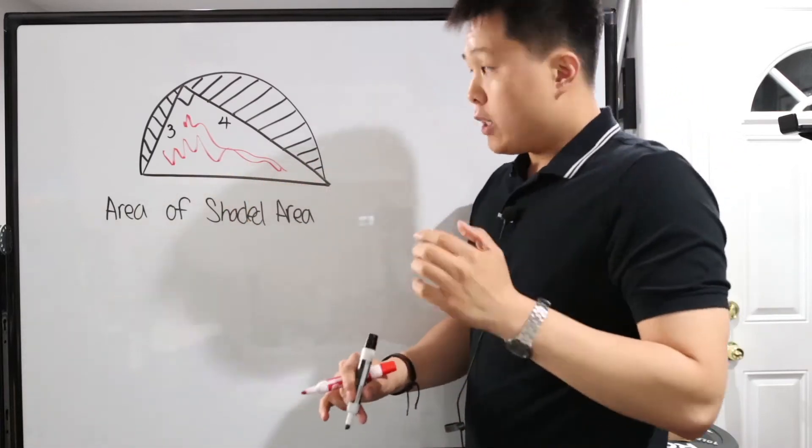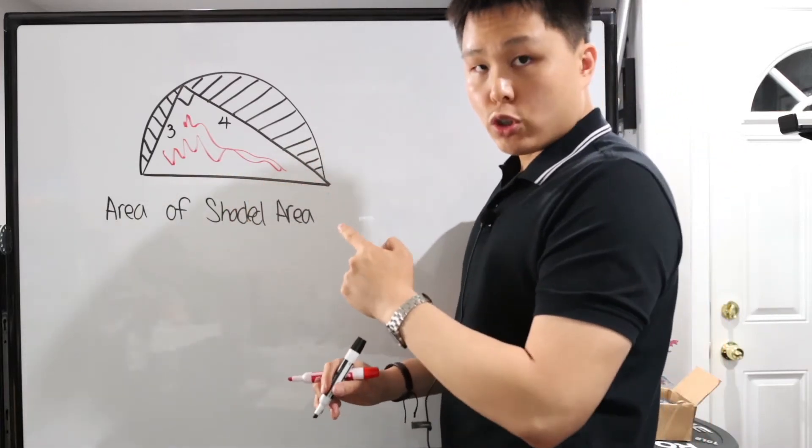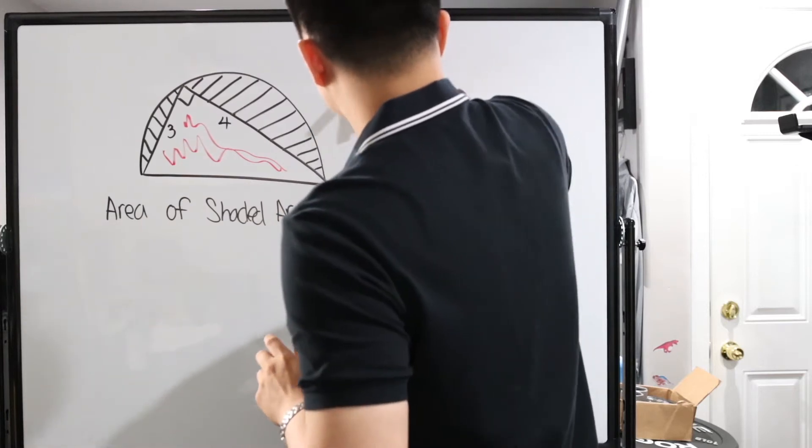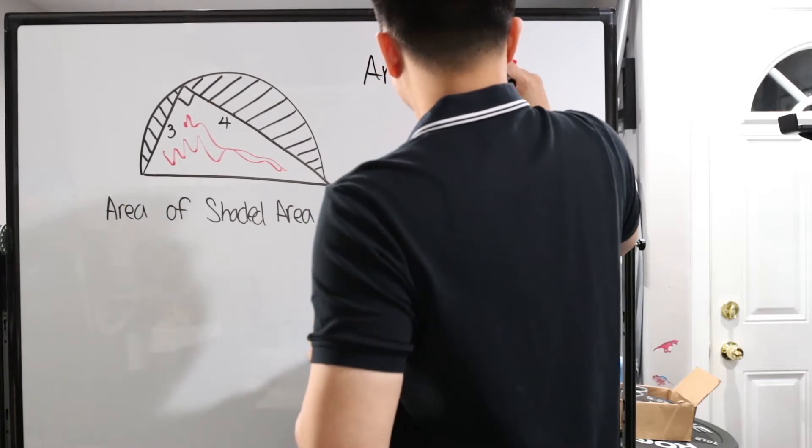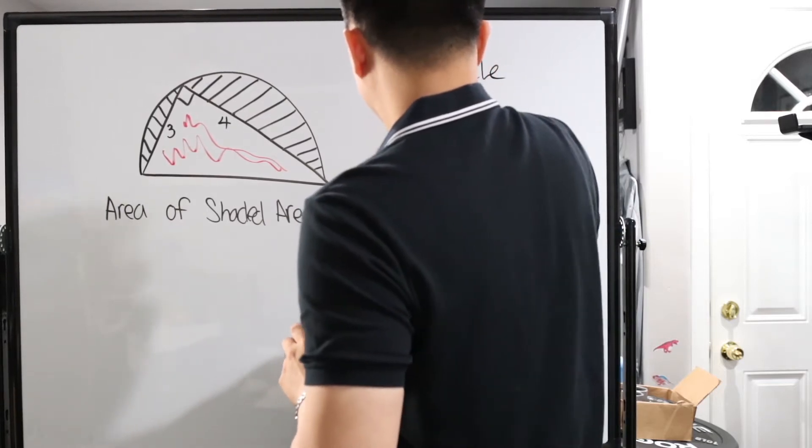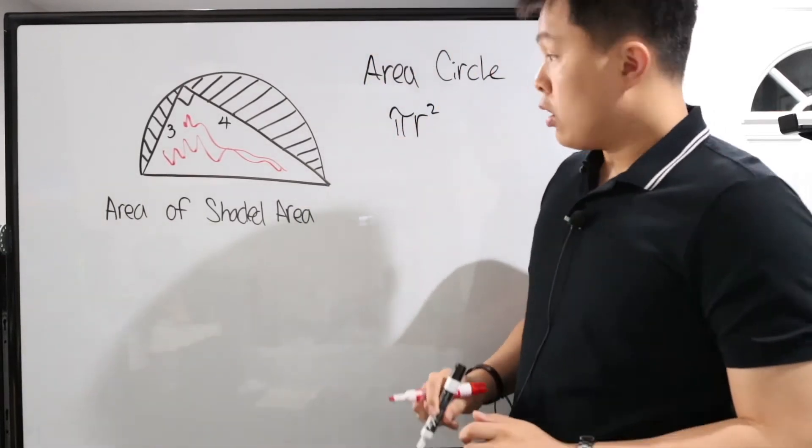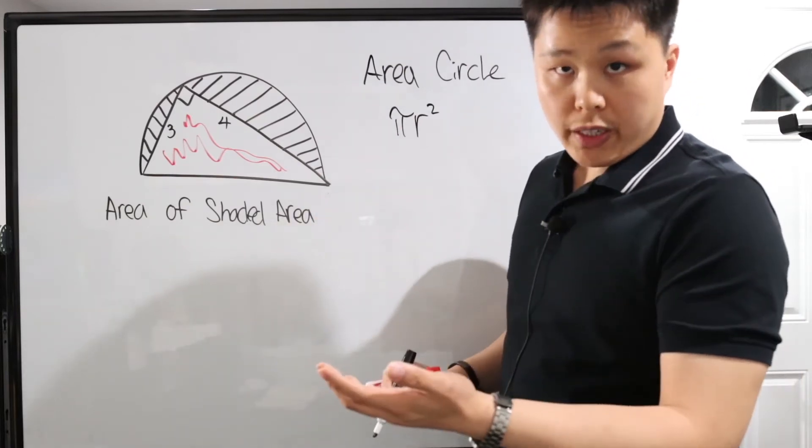First and foremost, several things. Area of a circle, remember, area of a circle is equal to pi r squared. So what is r? That's what we have to find out first.